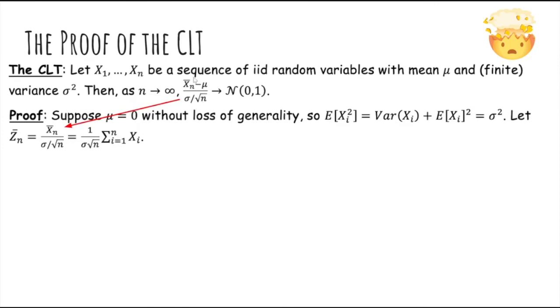So now let's call this expression the standardized sample mean. Let's call it Z̄n. Because μ is zero, we can remove that. And now by plugging in the definition of the sample mean, we get 1 over σ√n times the sum of the Xi's.